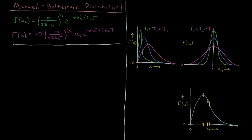If you solve for this, what you end up getting is that the distribution of speeds for gas particles is going to be 4π times the pre-factor cubed — that was (mass divided by 2π times Boltzmann constant times temperature) to the three-halves power — times velocity squared times e to the minus m·v² divided by 2k_B·T.